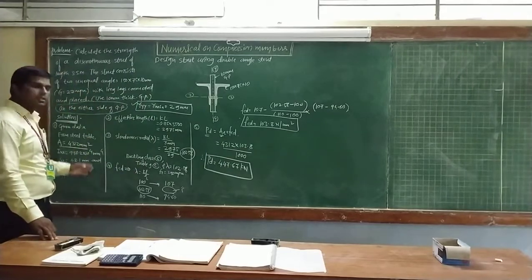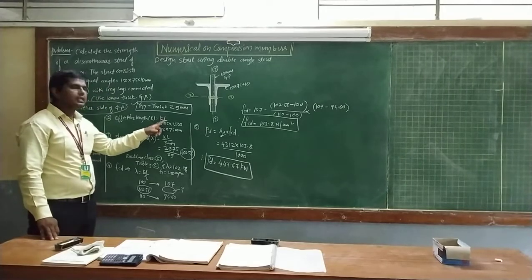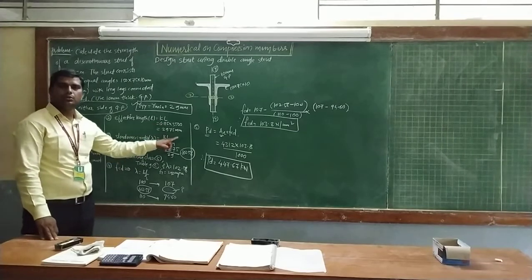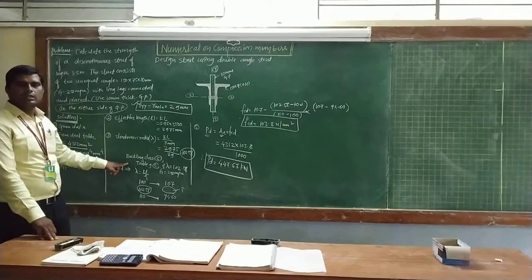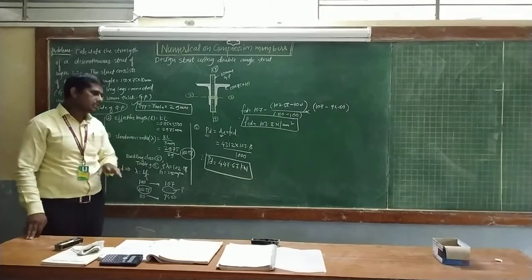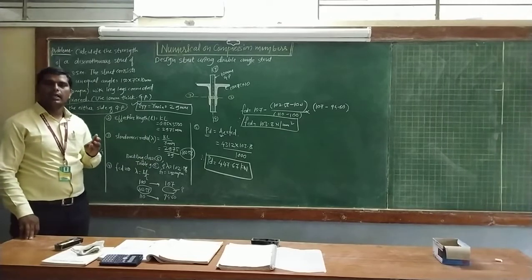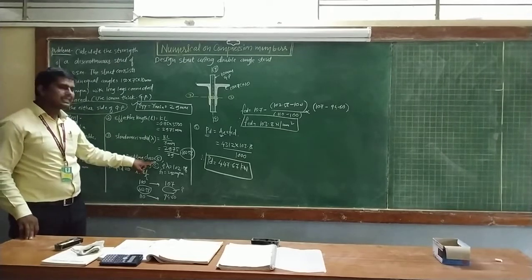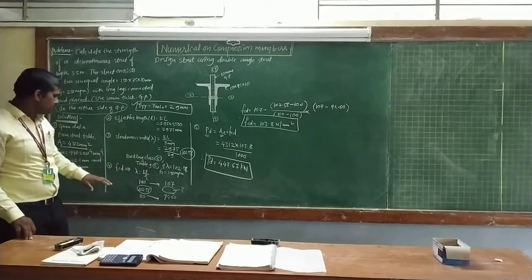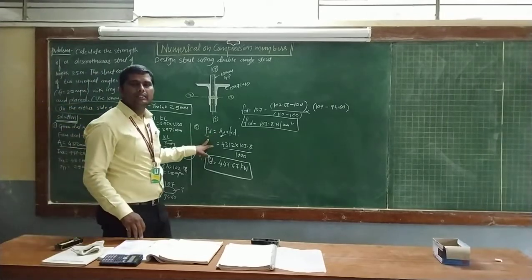So this is the final solution and final step to determine the design compressive strength, which consists of finding the properties of the unequal angle section, finding the effective length using table number 11, the slenderness ratio lambda equals KL by r minimum, then choosing the buckling class—for angle section, T section, solid section, or channel section, buckling class C is applicable only. Buckling class A, B, and D are not applicable; only C class is applicable to all these sections. Find the FCD values by using interpolation, and the last value is the design compressive strength.